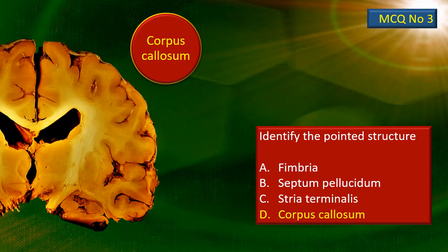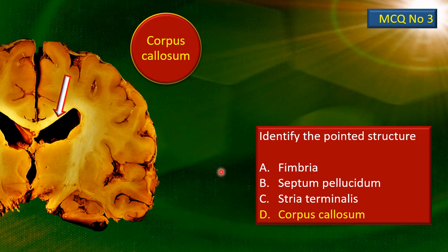MCQ number 3: that's the corpus callosum, forming the roof of the lateral ventricle. You can see the midline curtain — the septum pellucidum — separating the two lateral ventricles. That's the corpus callosum, a huge band of commissural fibers connecting the two cerebral hemispheres.